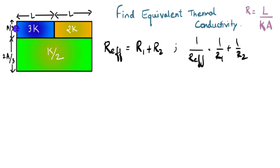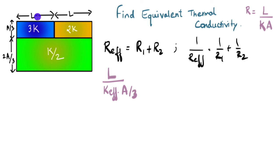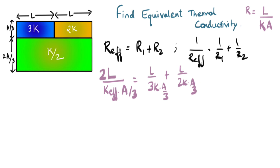First, let's find the equivalent thermal resistance of the blocks in series. R_effective can be written as 2L divided by K_effective times (A/3), since the area is A/3 and the combined length is L plus L equals 2L. This equals R1 plus R2, where R1 is L divided by 3K times (A/3), plus R2 which is L divided by 2K times (A/3). The A/3 cancels throughout, and so does L.